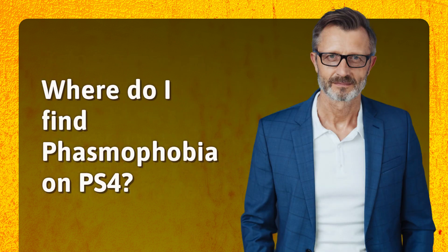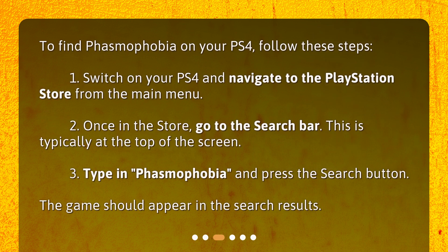Where do I find Phasmophobia on PS4? To find Phasmophobia on your PS4, follow these steps. First, switch on your PS4 and navigate to the PlayStation Store from the main menu. Second, once in the store, go to the search bar — this is typically at the top of the screen. Third, type in "Phasmophobia" and press the search button. The game should appear in the search results.